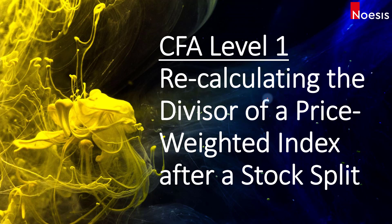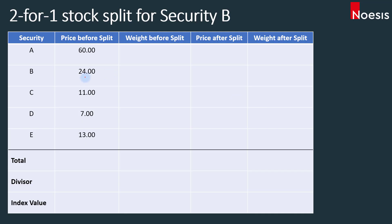In a price-weighted index, we assume that there will only be one unit of each constituent security. In this video, we're going to look at how we recalculate the divisor of a price-weighted index after a stock split. Say that we have five constituent securities A, B, C, D, and E, and these are the prices before a split in security B. We're going to make an assumption that there will be a two-for-one stock split for security B.